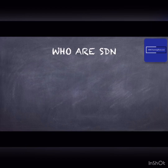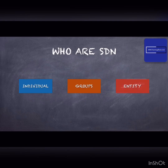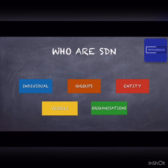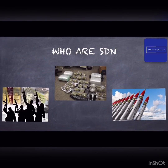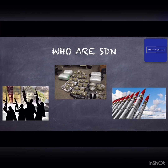An SDN, or Specially Designated National and Blocked Person, is an individual, group, vessel, entity, or organization deemed detrimental to the security of the United States. They can be located anywhere in the world and are blocked pursuant to the various sanction programs administered by OFAC. SDNs may be involved in criminal activities such as terrorism, drug trafficking, or weapons proliferation.